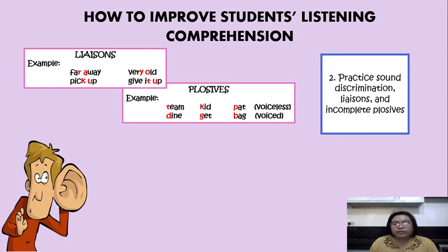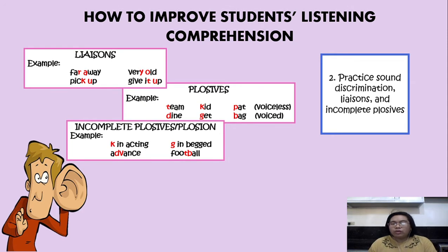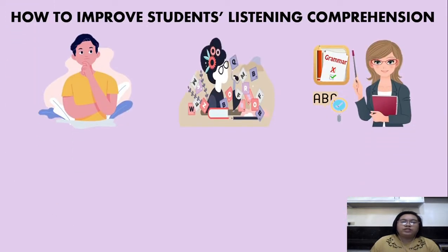For plosives, we have voiceless plosives such as 'theme,' 'kid,' and 'path,' and voiced plosives such as 'thine,' 'get,' and 'bag.' For incomplete plosives, which involve two plosives in a given word: for example, the K sound in 'acting' involves two voiceless plosives; the G sound in 'begged' involves two voiced plosives; the DV sound in 'advance' involves voiced plosives; and the TB sound in 'football' involves one voiceless and one voiced plosive.